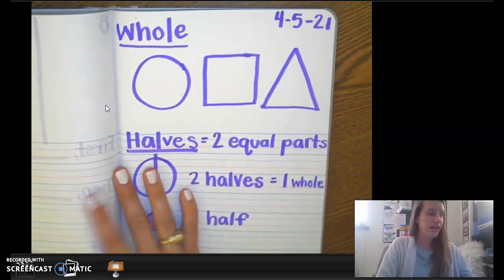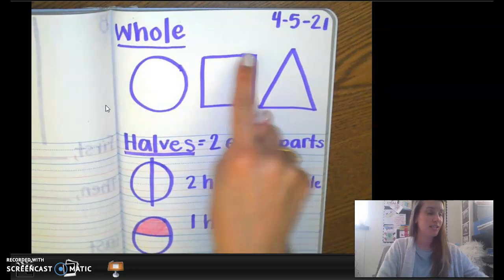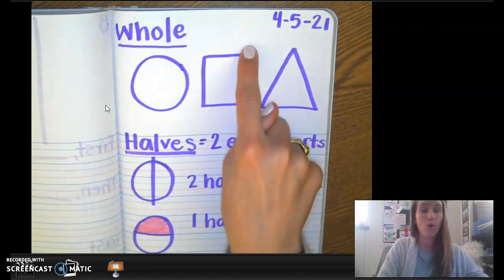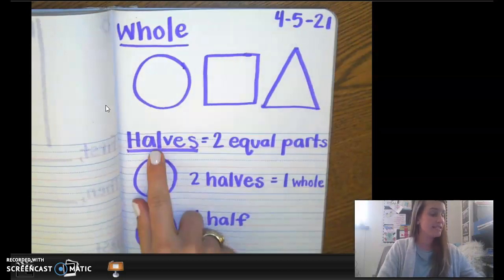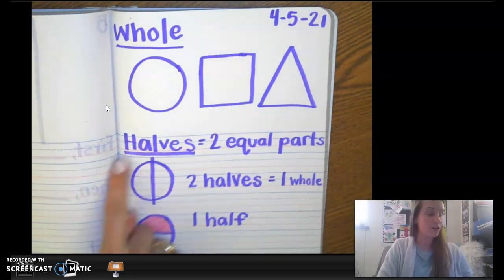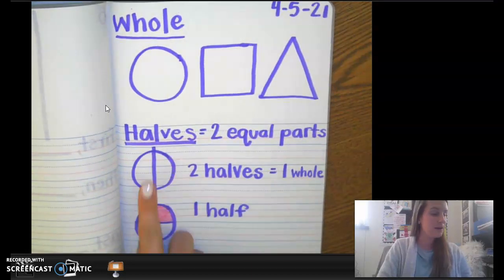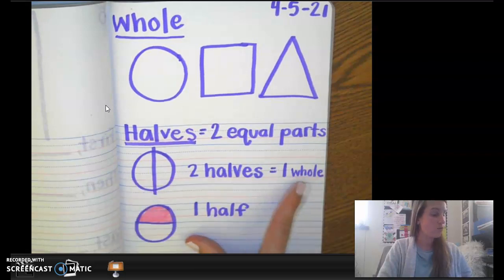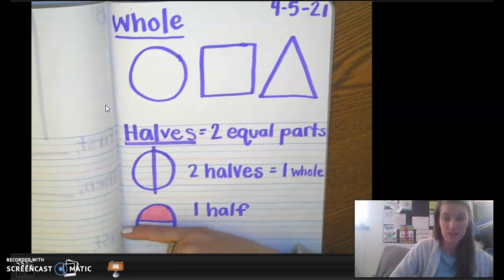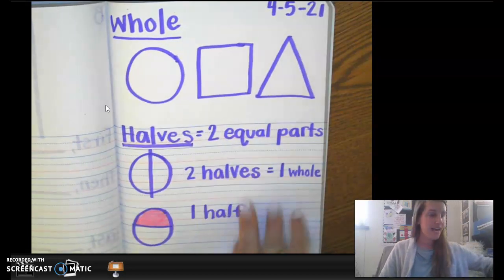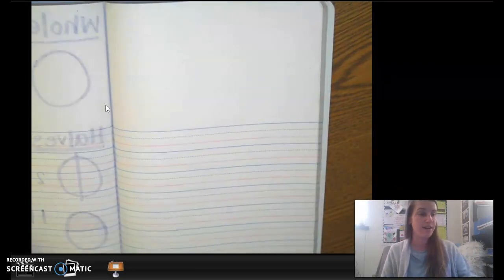So yesterday in our journal, we talked about whole shapes, which means the entire shape, just like the kids started out with the whole pizza. Well, they had to split them into equal parts to share. When you split them into two equal parts, we call them halves. Do you remember that from yesterday? Halves. And we know that two halves equals one whole. And if we have just one equal part out of two, that is called one half. Well, today we are going to talk about even more parts with our fourths. So we can go to our next clean page.